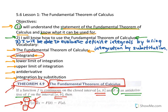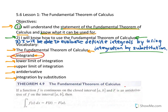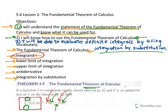Then the Fundamental Theorem of Calculus tells us that the exact value of the definite integral is equal to the antiderivative of the integrand evaluated at the upper limit of integration b, minus the antiderivative evaluated at the lower limit of integration a. So now we have a theorem that allows us to find the exact value of a definite integral. If you're interested in reading the proof, you can refer to section 5.6 of your textbook.